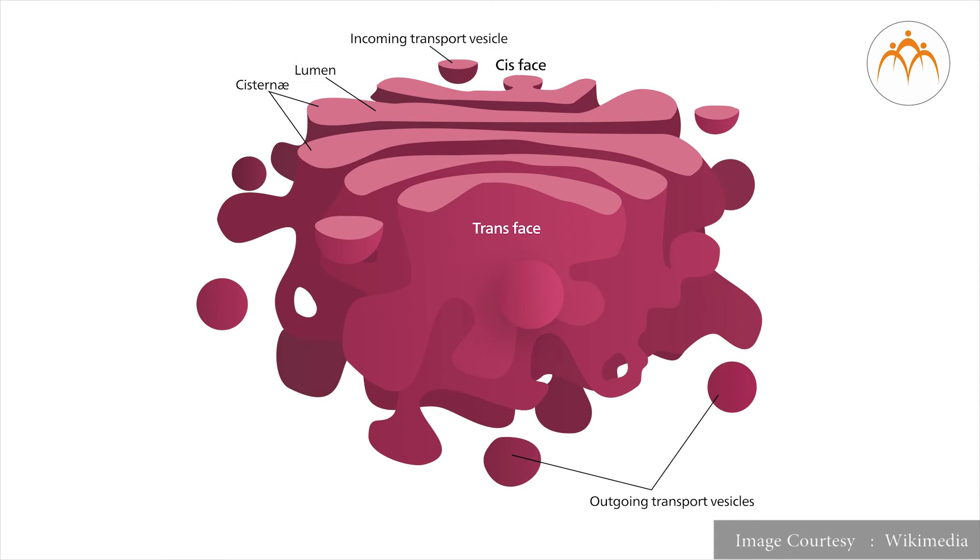The stack of cisternae has two ends or faces. One is the cis or forming face and the second is trans or maturing face. These two faces are quite different from one another. The sacs on the cis or forming face often are associated with the ER and differ from the sacs on the trans or maturing face in thickness, enzyme content, and degree of vesicle formation.